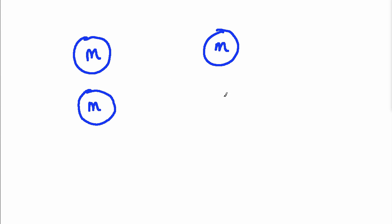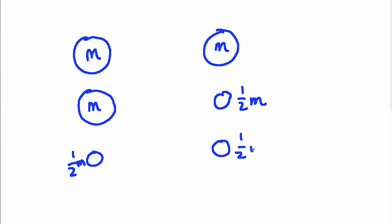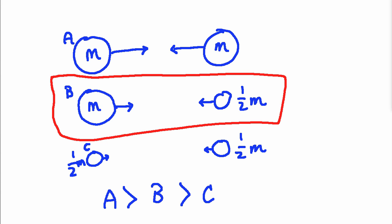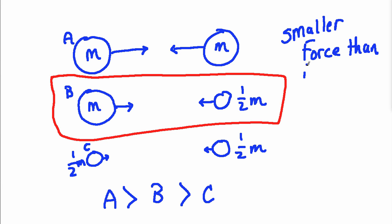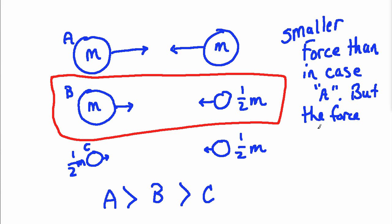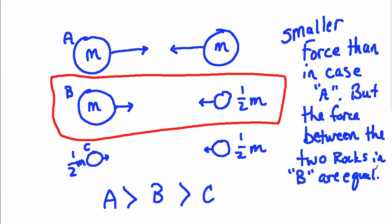Let's return to those three cases with rocks a, b, and c, each separated by distance d. Drawing the force arrows: the top pair — both mass m at distance d — has the largest force. The middle case has a slightly smaller force because one of the two masses is less massive. In the bottom case, both rocks' mass is smaller, so the force on each is smaller still. The ranking is a is greater than b is greater than c. Importantly, even though the rocks in case b aren't the same mass, they still have the same size force on each other — just smaller than in case a.